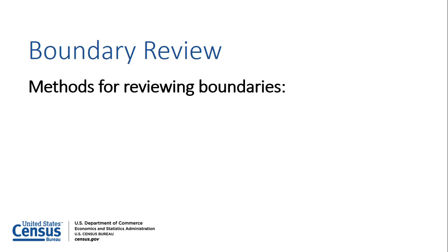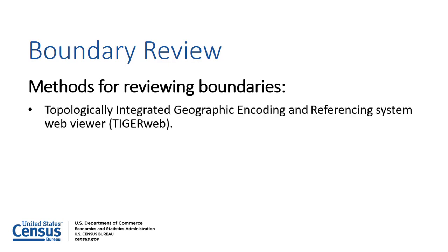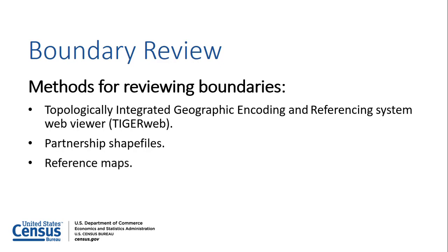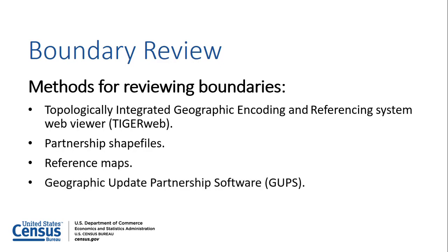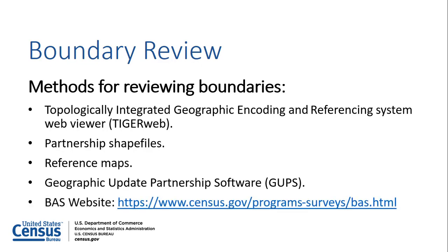Participants have multiple options available to review their boundaries. TigerWeb is a web-based mapping application that allows users to visualize the Census Bureau's topologically integrated Geographic Encoding and Referencing system and provides a simple way to view Tiger data without downloading any data. Participants also have the option to download partnership shapefiles for use within their own GIS software, download BAS PDF reference maps, or use the Geographic Update Partnership software, referred to as GUPS, to review their boundaries. All of these tools are available on the BAS website.